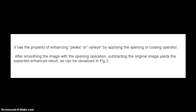These two transformations have the property of either enhancing the peaks or the valleys by applying the opening or closing operator. When you're enhancing the peaks, you use the opening operator. When you're enhancing the valleys, you use the closing operator. After smoothing an image with the opening operation and then subtracting the original image, you will get the enhanced result, which I'll show in figure two.